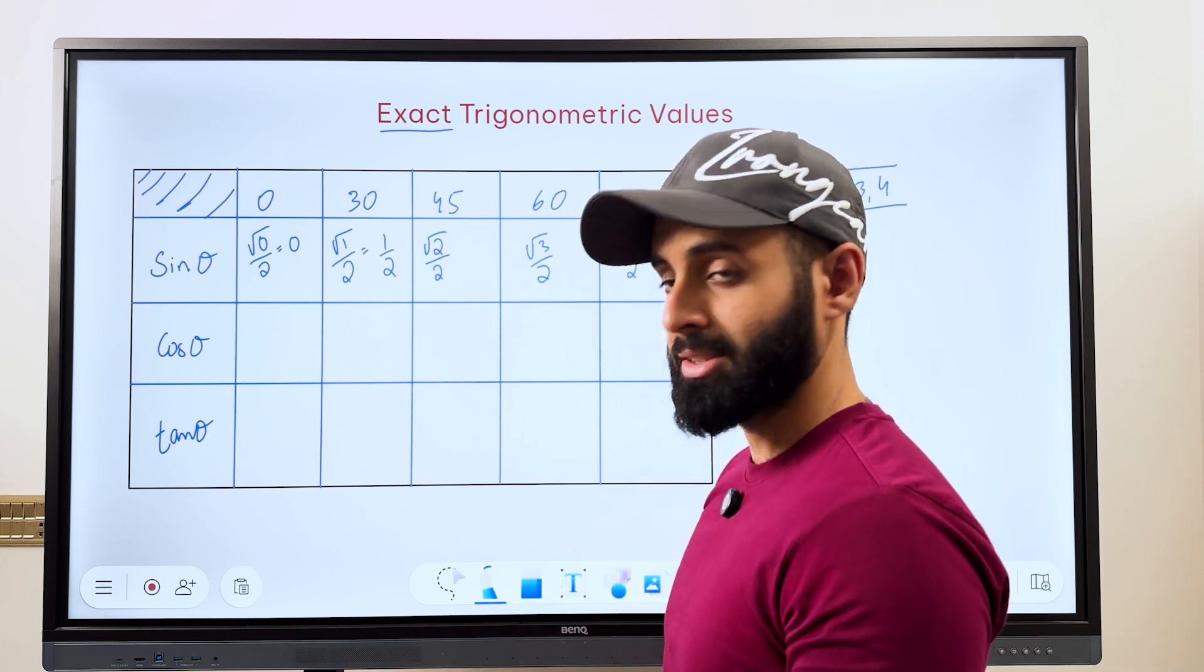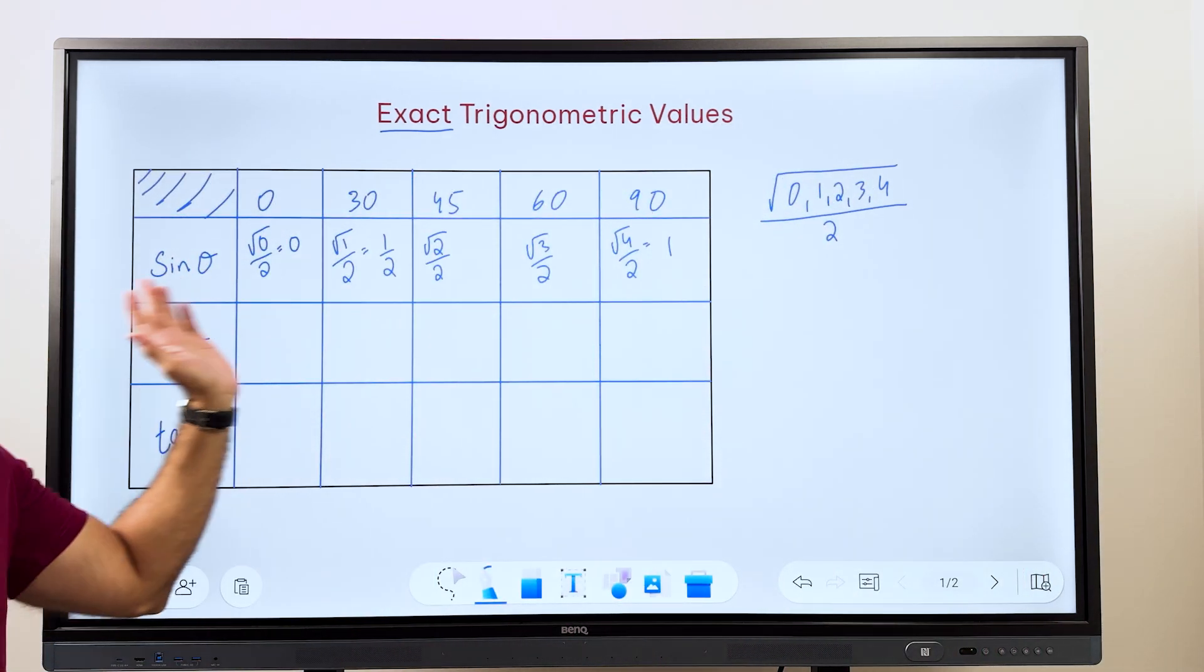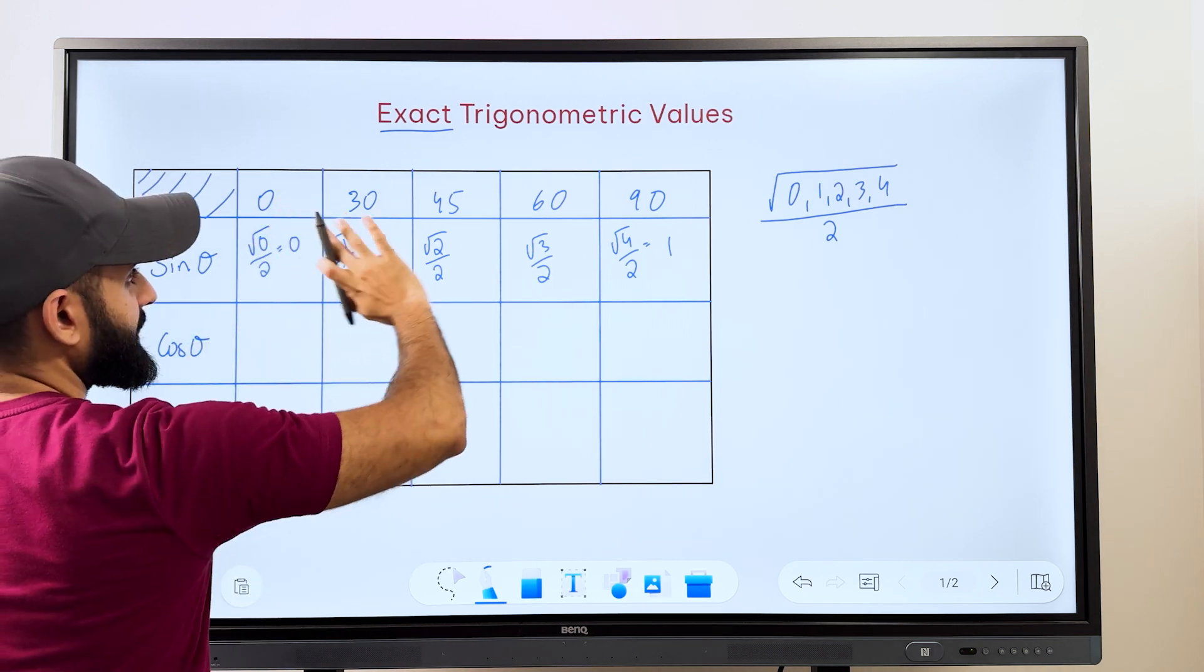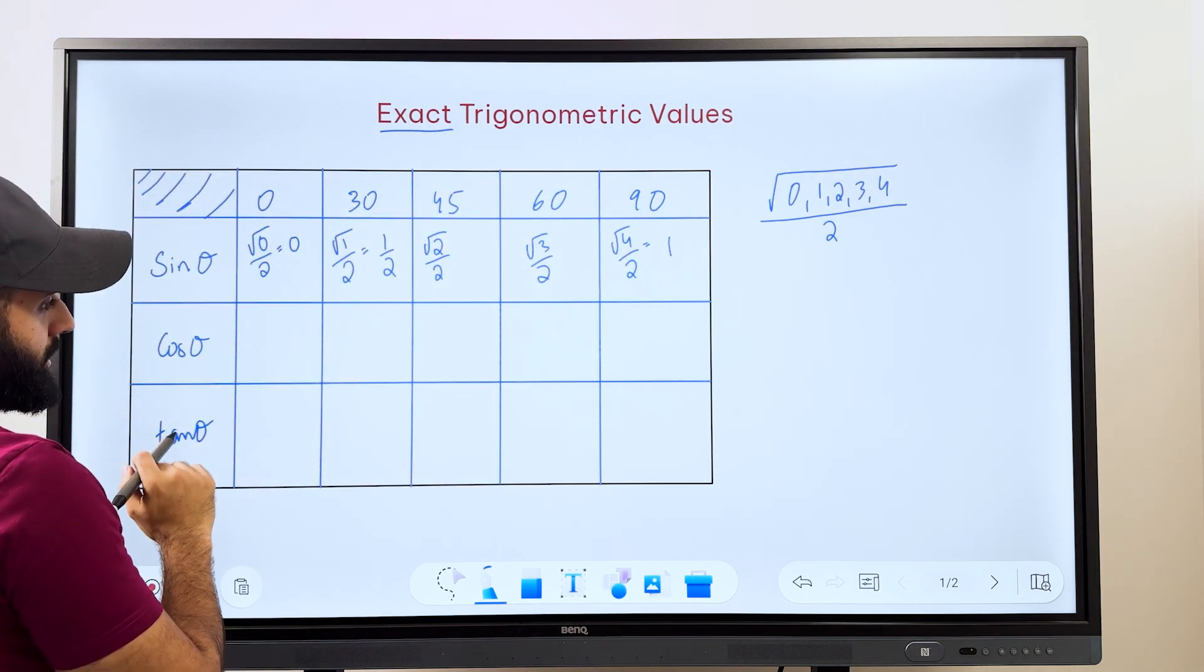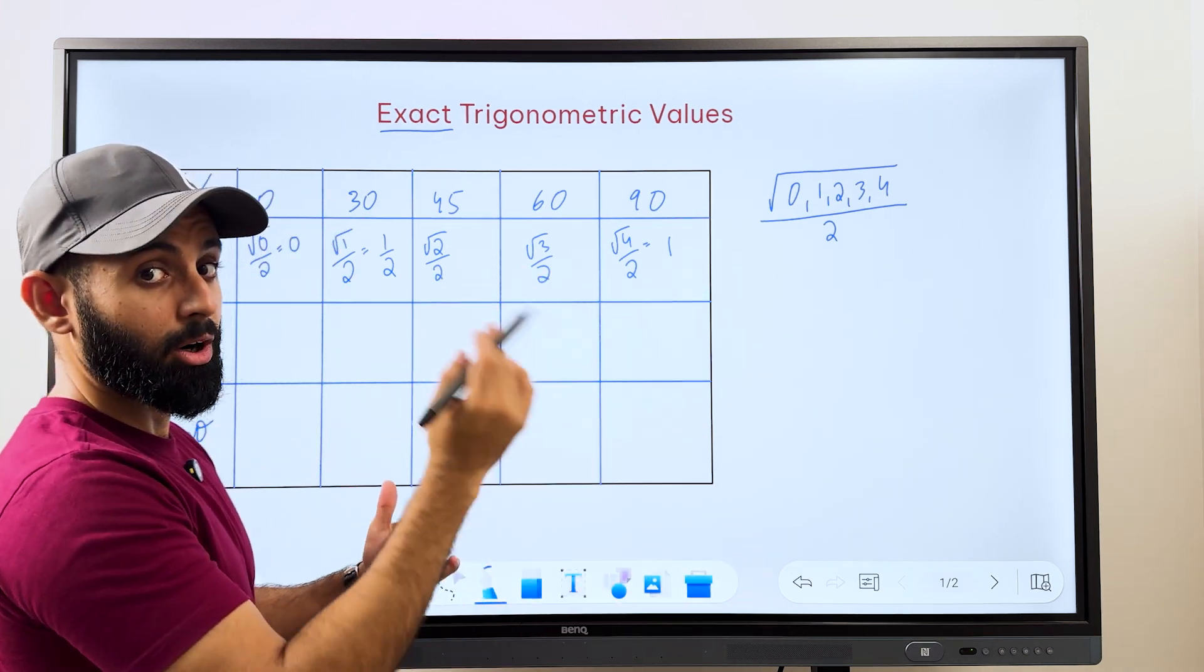Now what do we do for cos? This is where it gets interesting. So for cos, what we do is we simply reverse the values. So whatever sin 90 is, is going to be cos 0. Or in simple terms, we're just going to write these values, but in the opposite order.